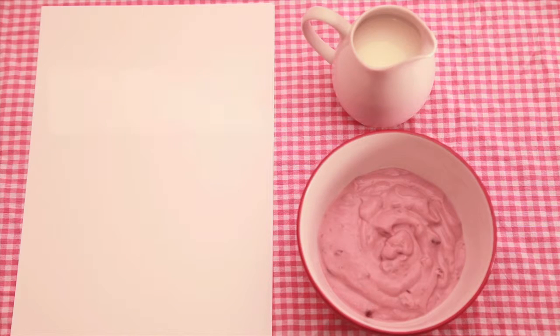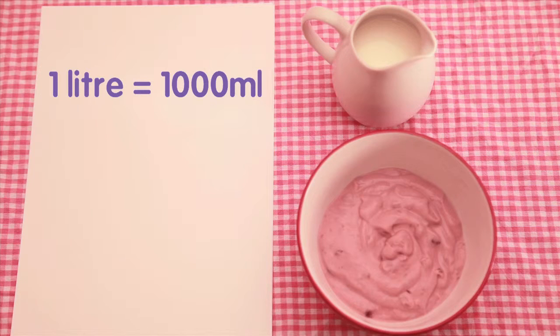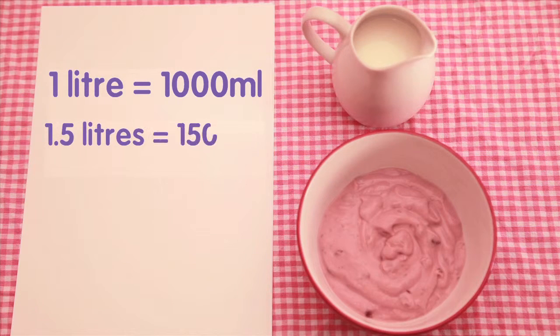One litre equals 1000 millilitres, therefore 1.5 litres equals 1500 millilitres.